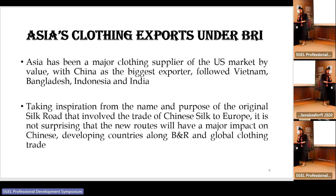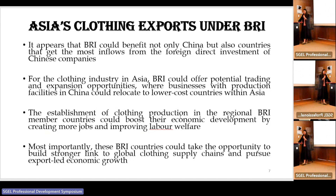Asia has been a major clothing supplier to the US market by value. China was the biggest exporter, followed by Vietnam, Bangladesh, Indonesia, and India. Taking inspiration from the original Silk Road that involved the trade of Chinese silk to Europe, it is not surprising that the new Belt and Road will have a major impact on Chinese developing countries. BRI would benefit not only China but also countries that receive the most FDI from Chinese companies. For the apparel industry in Asia, BRI would offer potential trading and expansion opportunities where businesses with production facilities in China would be relocated to lower cost countries within Asia.